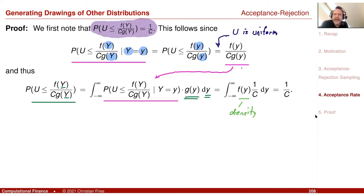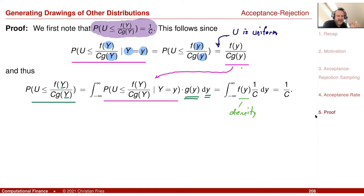I really like to have C small, but C is a constant which I need to dominate the other density. So be parsimonious, do not be too wasteful choosing C.